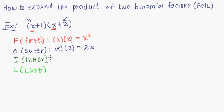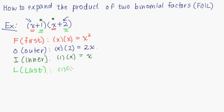Inner is the terms that are inside — the second term in the first factor and the first term in the second factor, like the inside of this product. So we have 1 times x, which is just x. And then finally we have last, which are the last terms of each factor. So that's 1 times 2, which is 2.